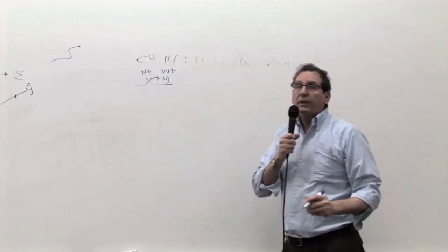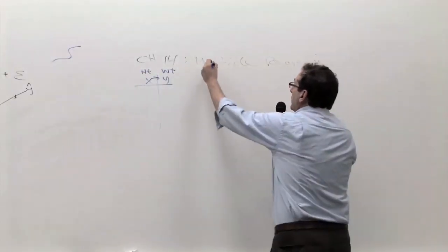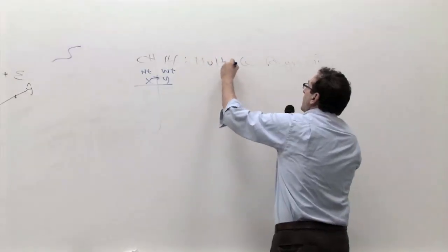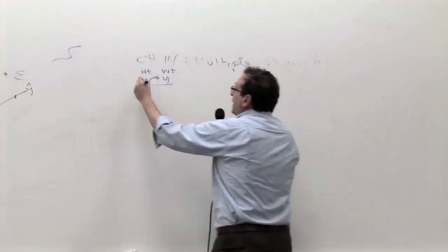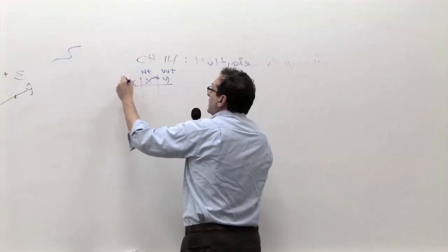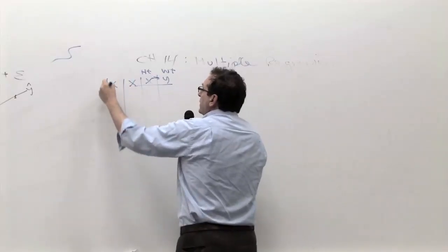What we're going to be doing in chapter 14 is simply extending this to multiple regression where you're going to have not just one x but many x's that are going to be used to predict somebody's weight.